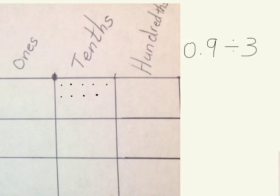In this first problem we have 9 tenths divided by 3. In my place value chart I show 9 tenths. I'm going to divide it into 3 equal parts.